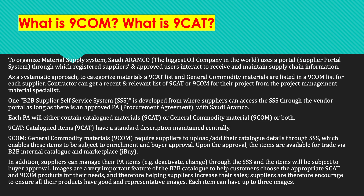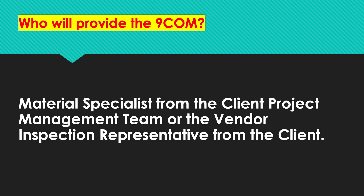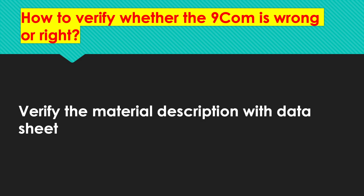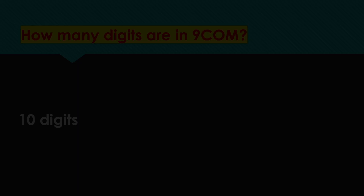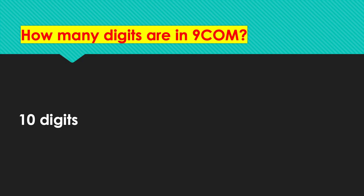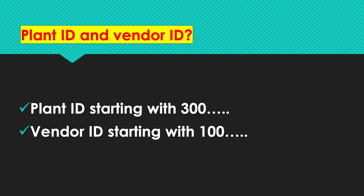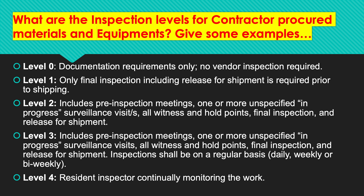Each item can have up to three images. Who will provide the 9COM? The material specialist from the client's project management team (PMT) or the vendor inspection representative from the client will provide the 9COM to the contractor. How to verify whether the 9COM is correct? Verify the material description with the data sheet. How many digits are there in a 9COM? Ten digits — plant ID and vendor ID. How do you identify the plant ID? It starts with 300; vendor ID starts with 100.